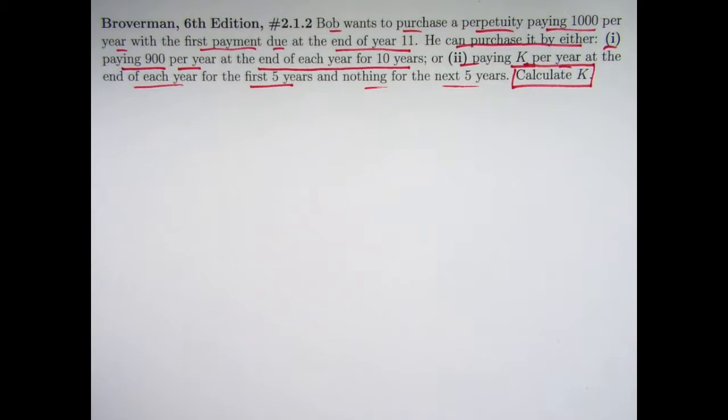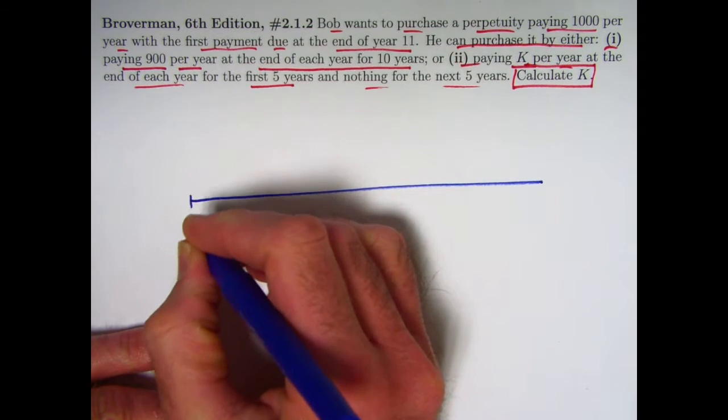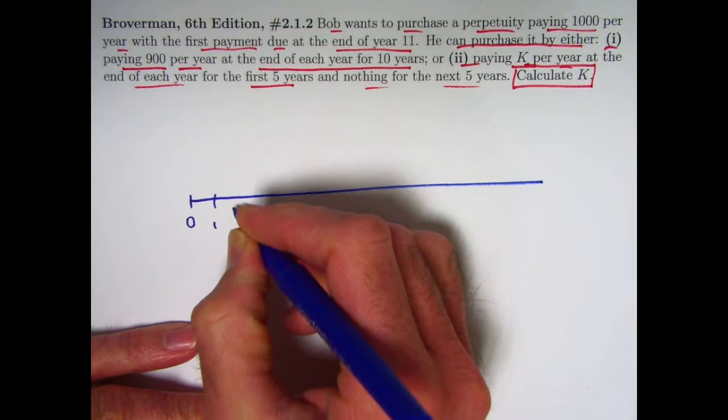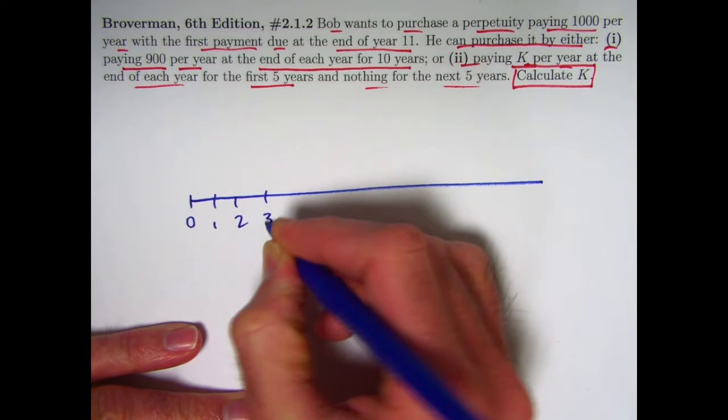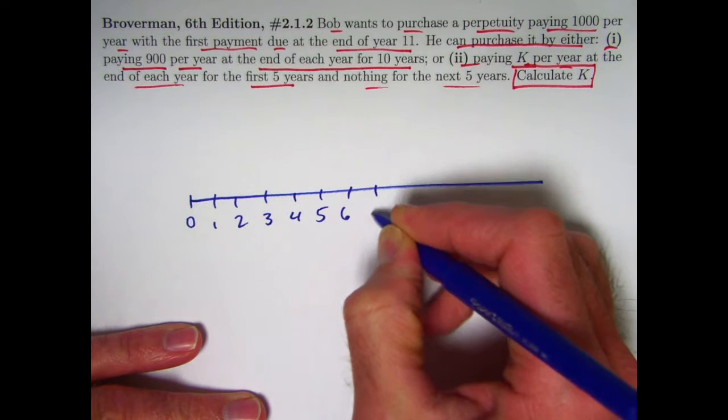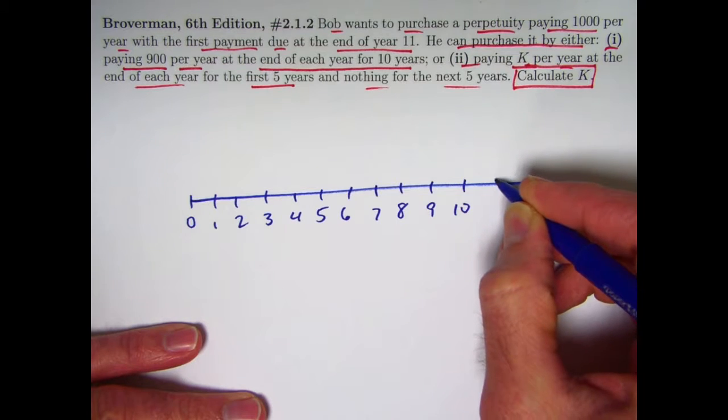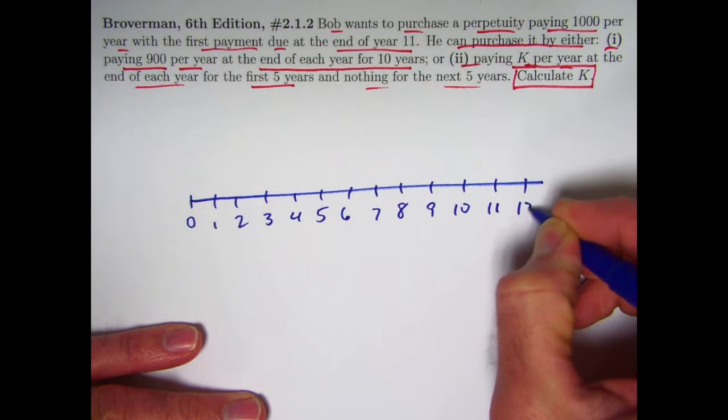All right, let's draw a number line. So here we are, time 0. I think I better write all these numbers here. Let's head up toward time 10. That's the end of 10 years. Then time 11, 12, 13.